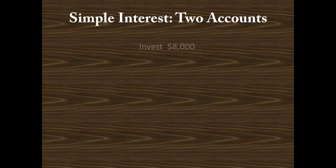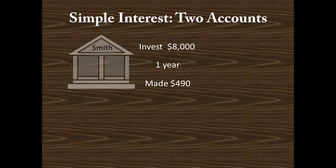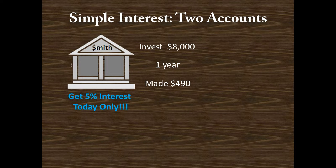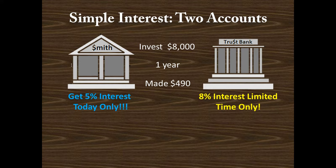Let's get into our example. We invest $8,000 for one year and we made $490. We have two accounts. We went to Smith Bank, which was offering 5% interest, so we invested some of that $8,000 there. Then a few days later, we saw that Trust Bank has 8% interest — 8% is better than 5% — so we put the rest of that $8,000 into Trust Bank.